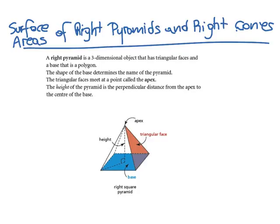A right pyramid is a three-dimensional object that has triangular faces and a base that is a polygon. The shape of the base determines the name of the pyramid. The triangular faces meet at a point called the apex. The height of the pyramid is the perpendicular distance from the apex to the center of the base.